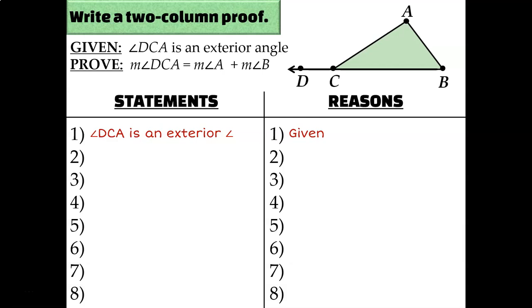Well, let's see. What do we know about exterior angles? We just learned that their definition is that they form a linear pair with their adjacent interior angle. So I could say that angle DCA and angle ACB are a linear pair. And that's because of the definition of exterior angle. So this angle and this angle are a linear pair.